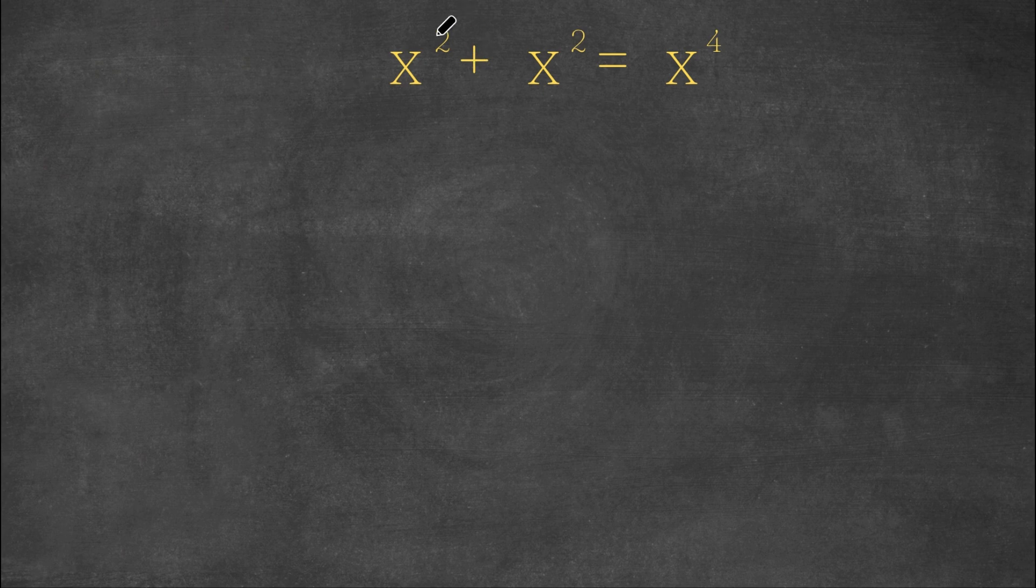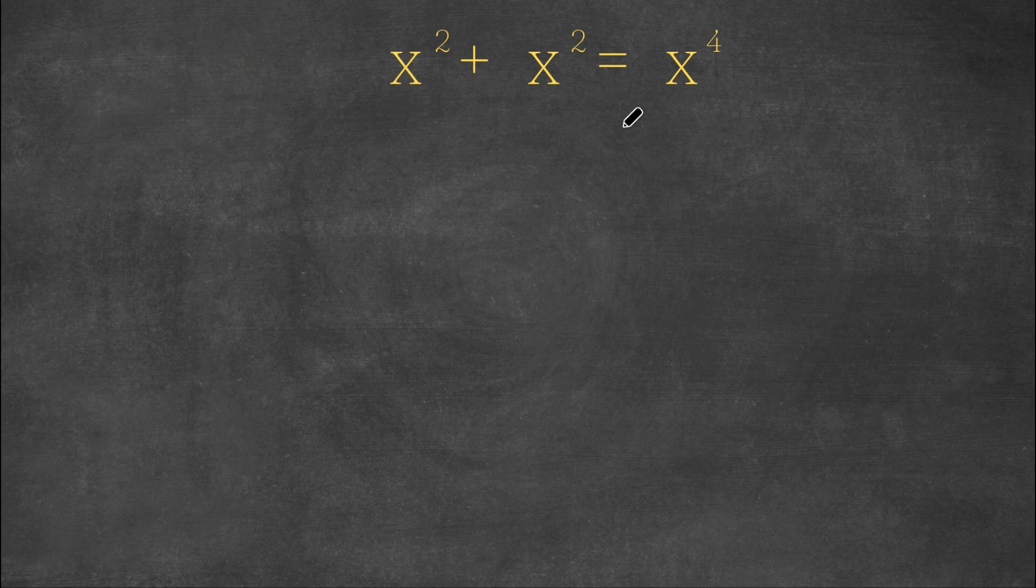So we have x squared plus x squared is equal to x to the power of 4. Now what I'm first going to do is I'm going to subtract x to the power of 4 on both sides.